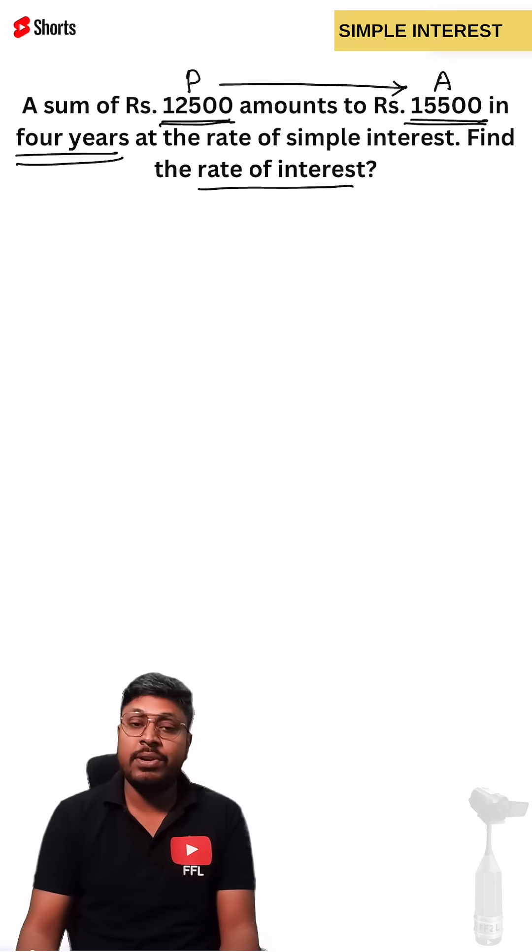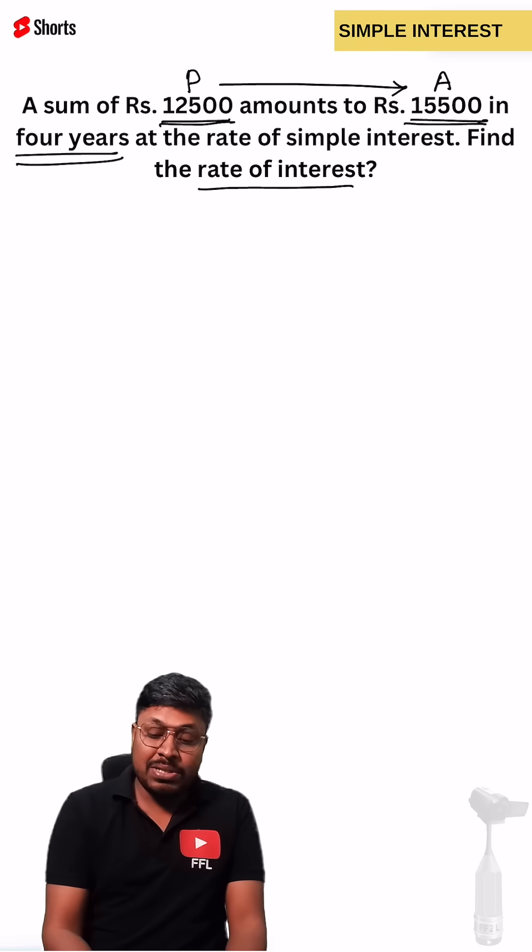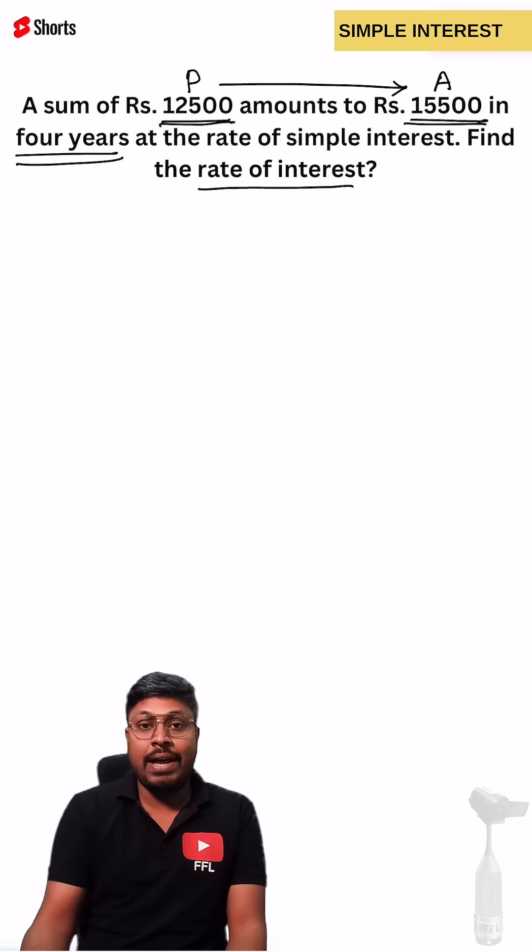Our target is to find what will be the rate of interest here. 12,500 becomes 15,500 in 4 years. That means the difference between 12,500 and 15,500 will be 3,000.